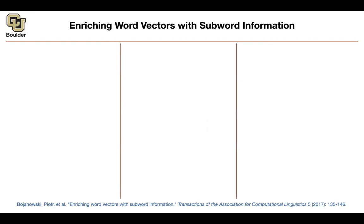Before we do that, let me quickly go through a recap of the skip-gram model, because we are going to generalize it. You have a bunch of words and a vocabulary of size W, where each little w in this set is a word — the first word, the second word, up until the last word in your vocabulary. You have a large corpus of your words, and capital T could be much bigger than capital W. Why? Because words are repeated — the same word can appear in multiple contexts and multiple documents.